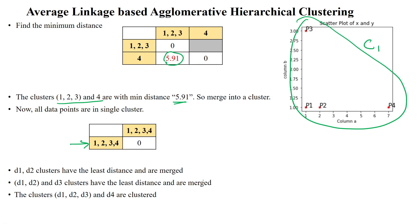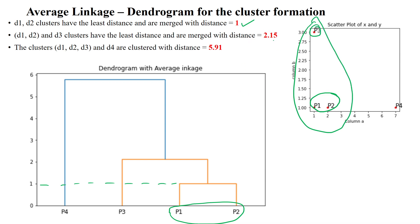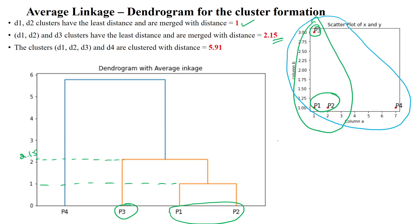We now sketch the dendrogram for this clustering. Initially, data points 1 and 2 are combined at distance 1. Then, the cluster {1,2} and data point 3 are merged at distance 2.15, shown approximately on the dendrogram. Finally, all four data points are clustered into a single cluster at distance 5.91, where data point 4 joins the group of data points 1, 2, and 3.